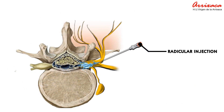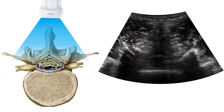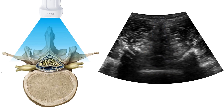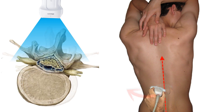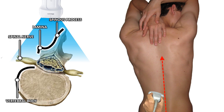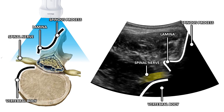Periradicular injection is performed in patients with radicular pain due to lumbar disc herniation or lumbar spinal stenosis. First, we will identify the midline on the intervertebral pattern. Once identified, we will slide the transducer lateral to the side of the nerve root damaged, identifying the transverse process. In the second step, we will slide the transducer below the transverse process until the spinous pattern is identified, below the interspinous pattern. Beneath the lamina, we will identify an acoustic window over the vertebral body, which will correspond to the foramen.